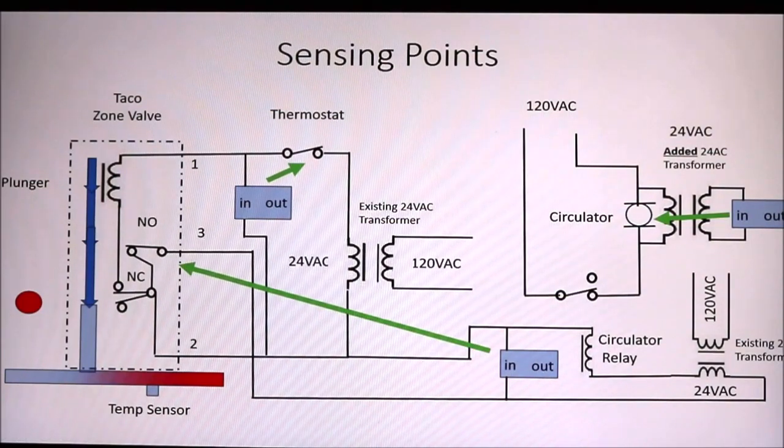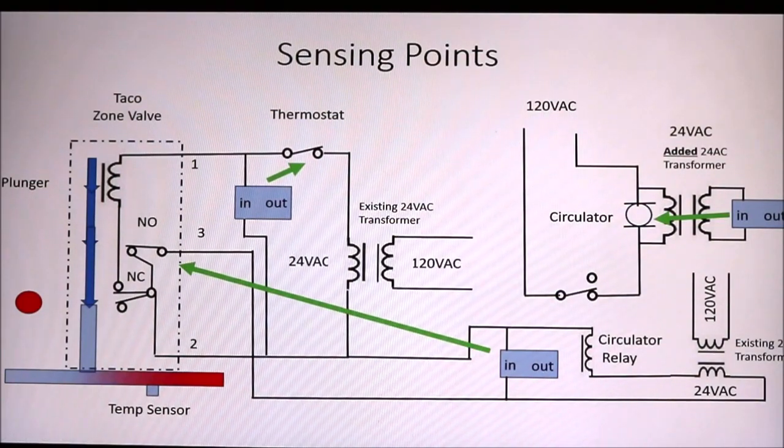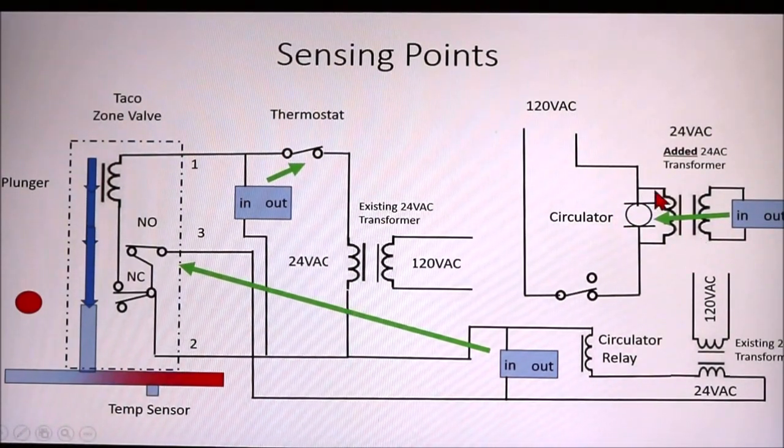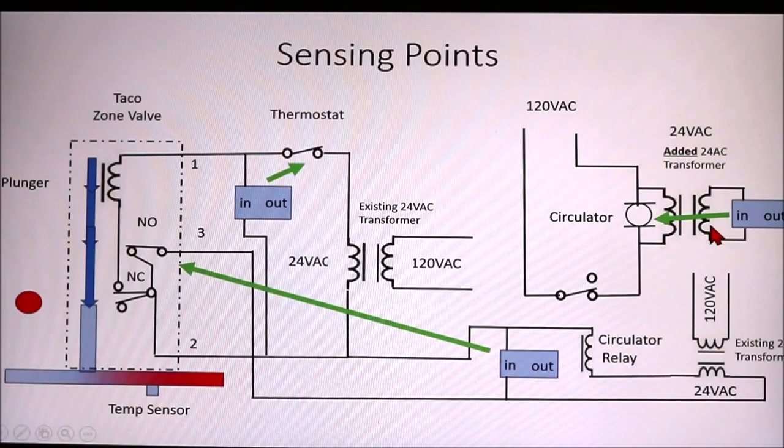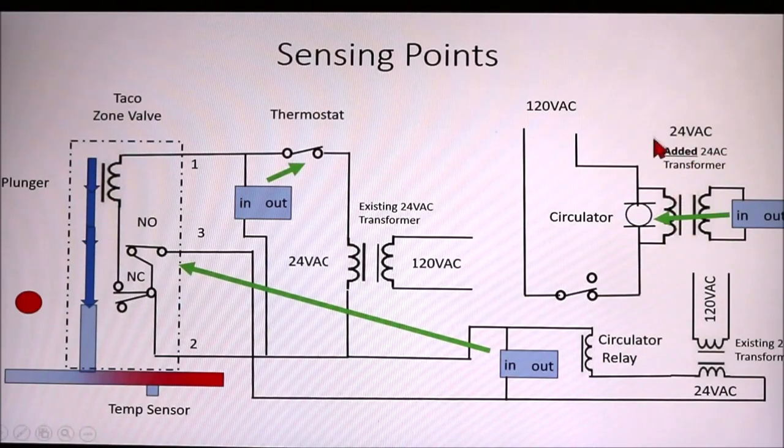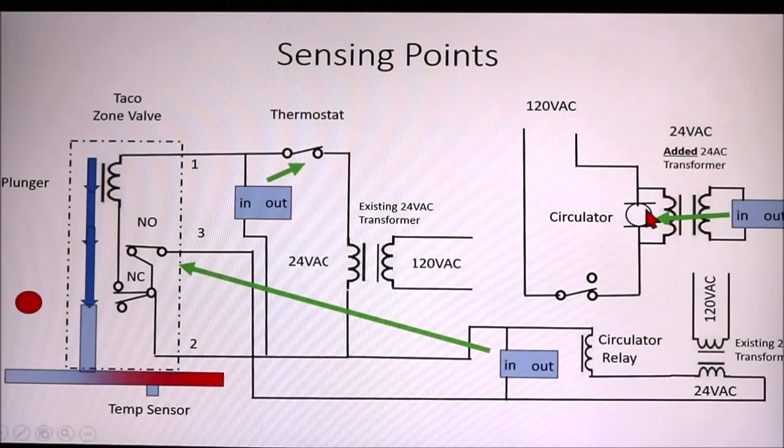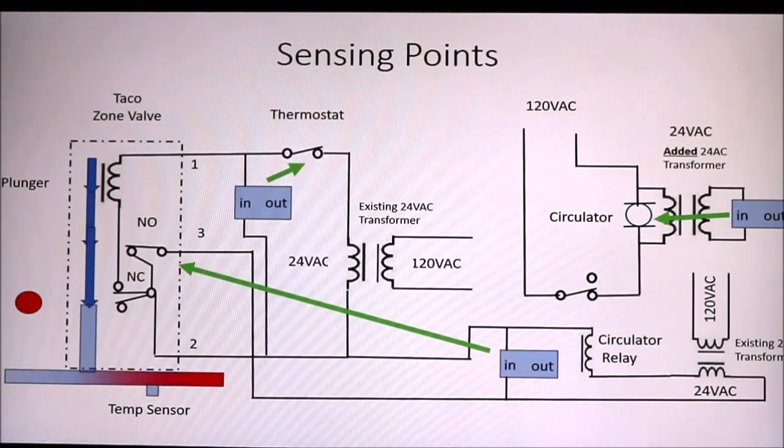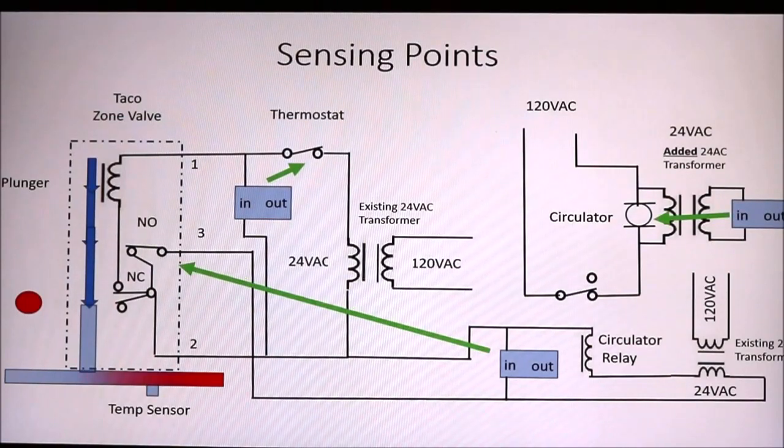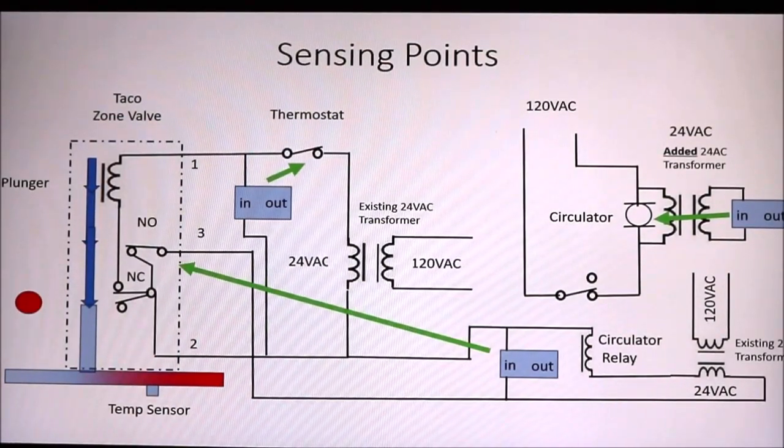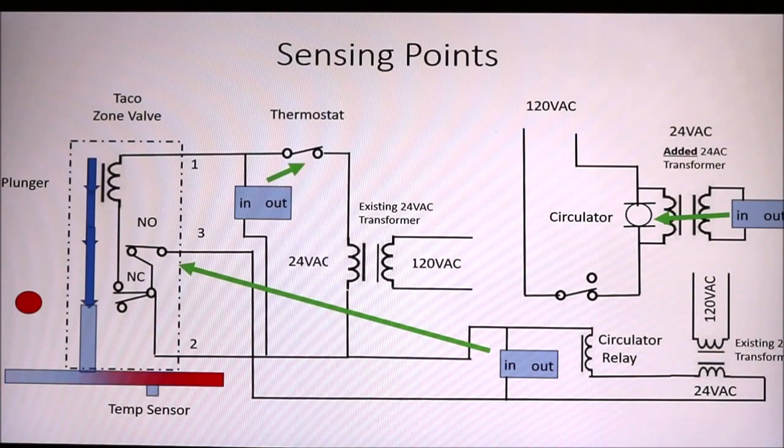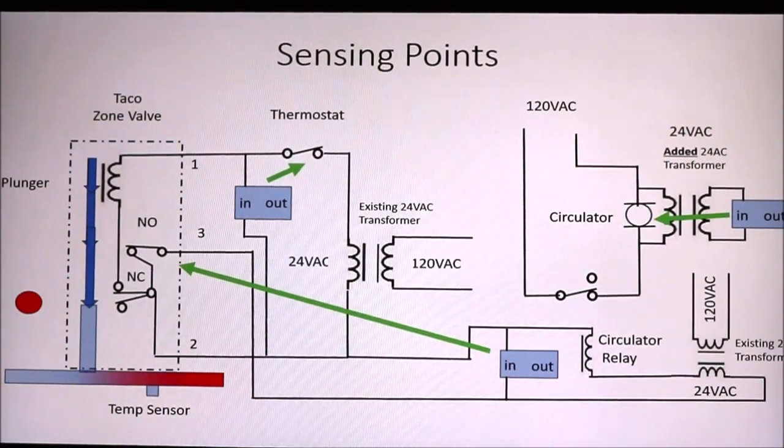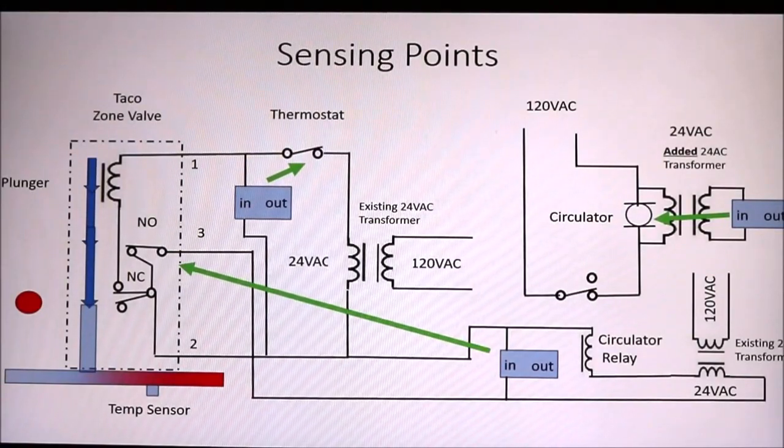Now, how do we know that the actual circulator is getting powered? Well, we'll put another one of those circuits through another 24 volt AC transformer to monitor the circulator. Now, in my case, I think I only have two circulators. One for this hot water loop that goes to the baseboard heating. And I have another circulator that powers the floor heating, the radiant heat system.